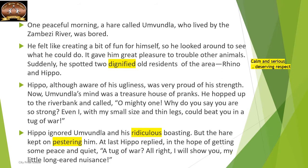He's calling out to Hippo, saying 'Oh mighty one, why do you say you're so strong? Even I with my small size and thin legs could beat you in a tug of war.' So he's trying to poke Hippo, who had been sitting calmly and quietly. Despite Hippo being so strong, Umundla is telling him that he is much better and can have a tug of war with anybody, being small in size.